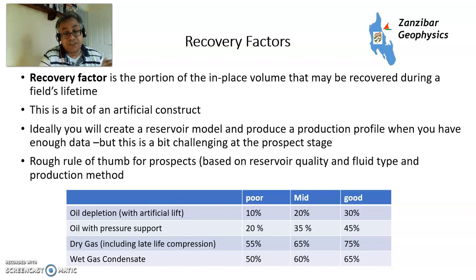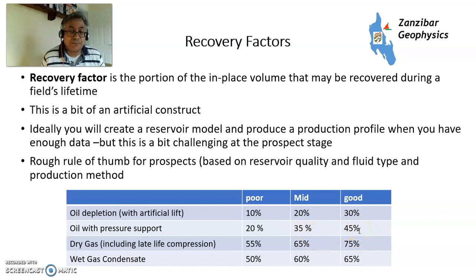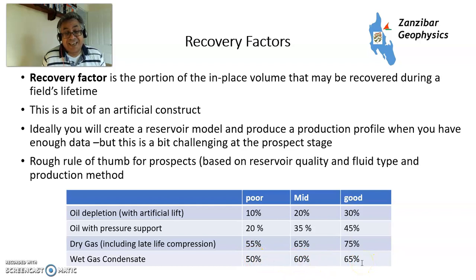Some typical recovery factors: for a depletion-drive oil field with artificial lift — poor reservoir 10%, medium 20%, good 30%. With pressure support such as water injection — 20% poor, 35% medium, 45% good, 50% exceptional. For dry gas with compression — 55% poor, 65% medium, 75% good. For wet gas condensate — 50% poor, 60% medium, 65% good. These are rules of thumb, but you really want to talk to your reservoir engineer about this one.